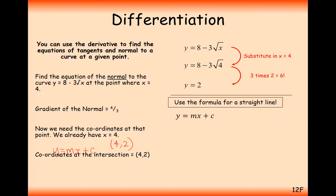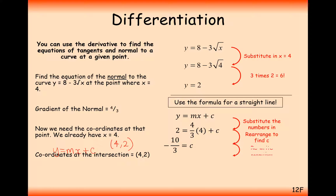Now we substitute these values into the straight line: 2 equals 4 thirds times 4 plus c. After rearranging, we find c is minus 10 over 3, then rewrite the answer as y equals 4 thirds x minus 10 over 3. It might be wise to rearrange this by multiplying through by 3.